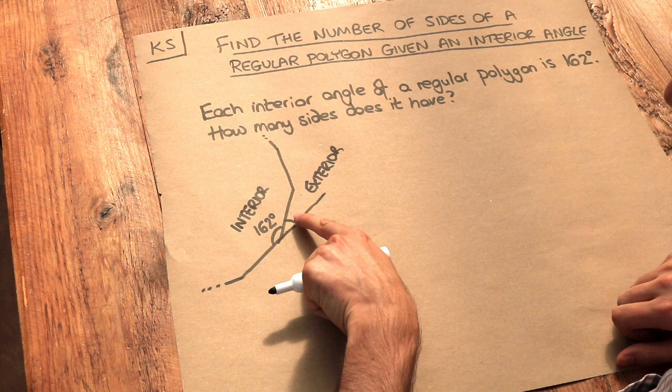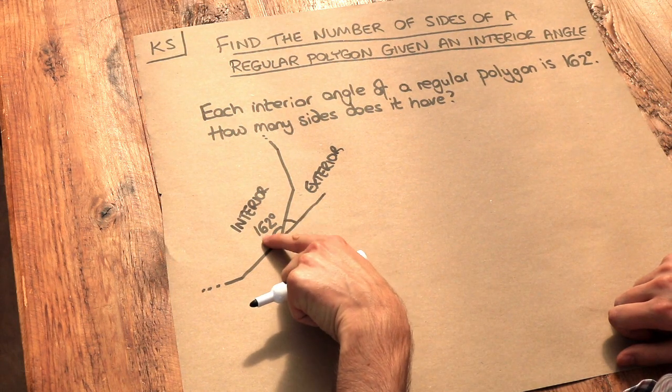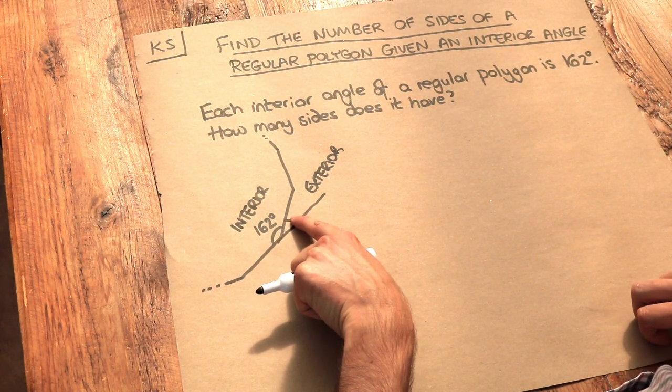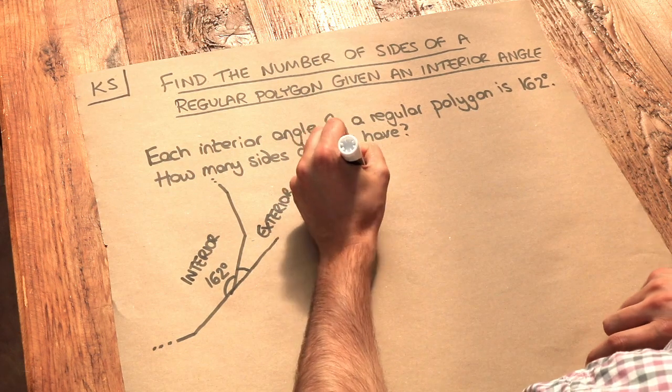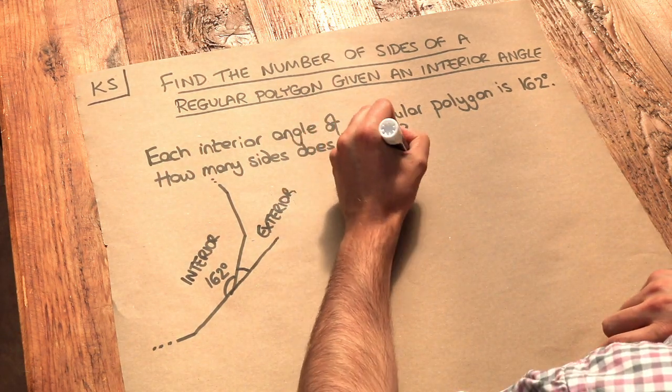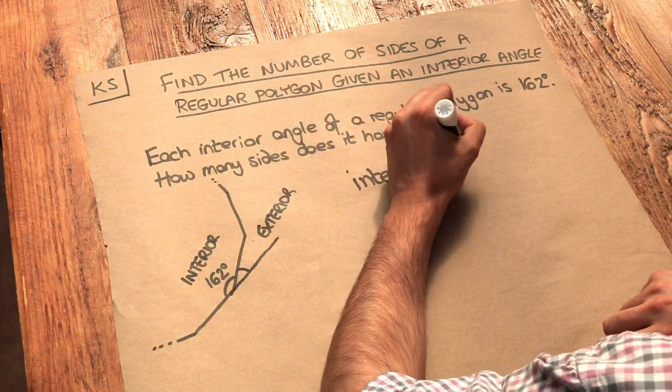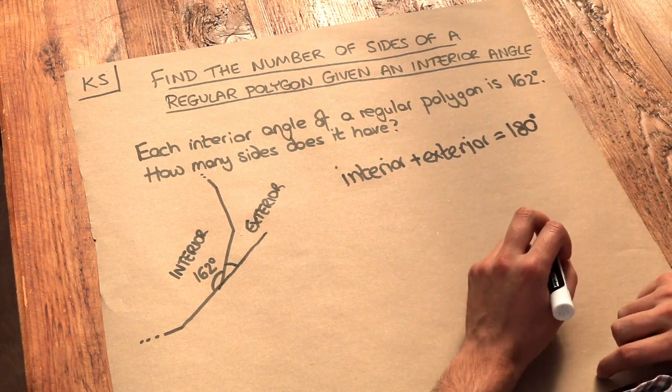And you may be able to spot that, can you see, these two angles, exterior and the interior, they add up to 180 degrees. So let me just write that down. Interior plus exterior add up to 180 degrees, that's important fact number one.